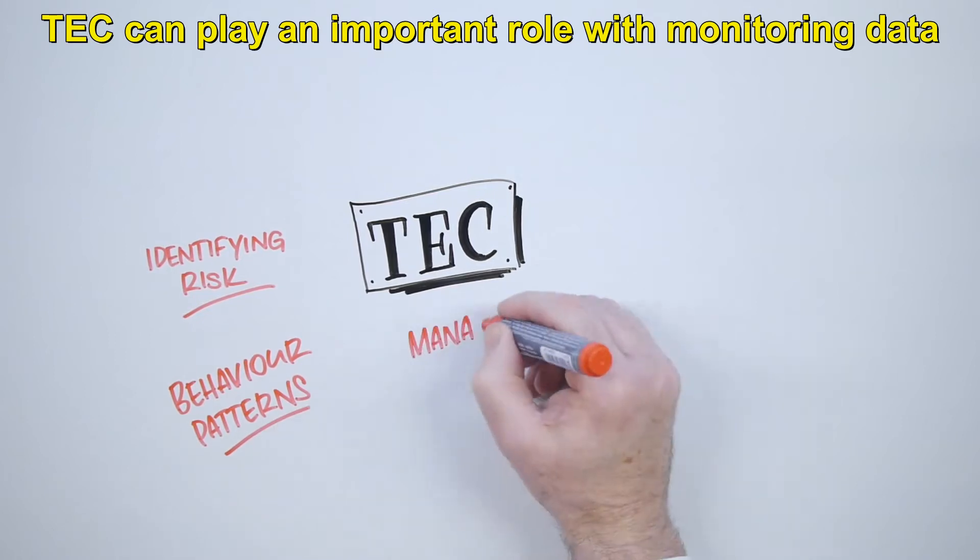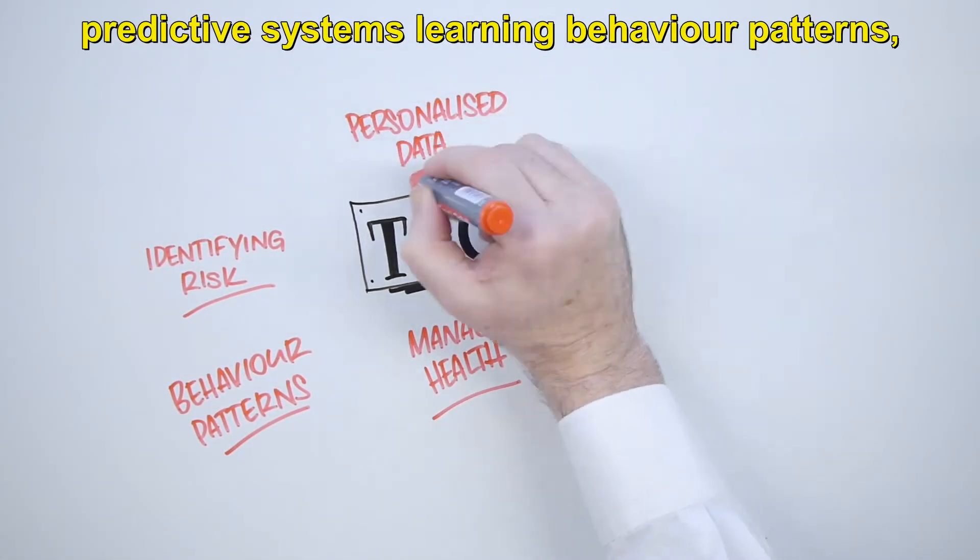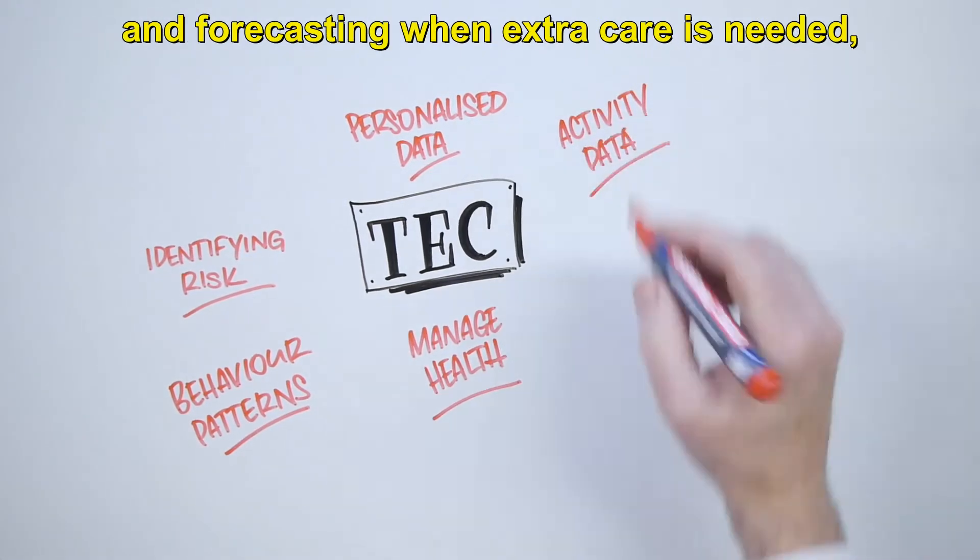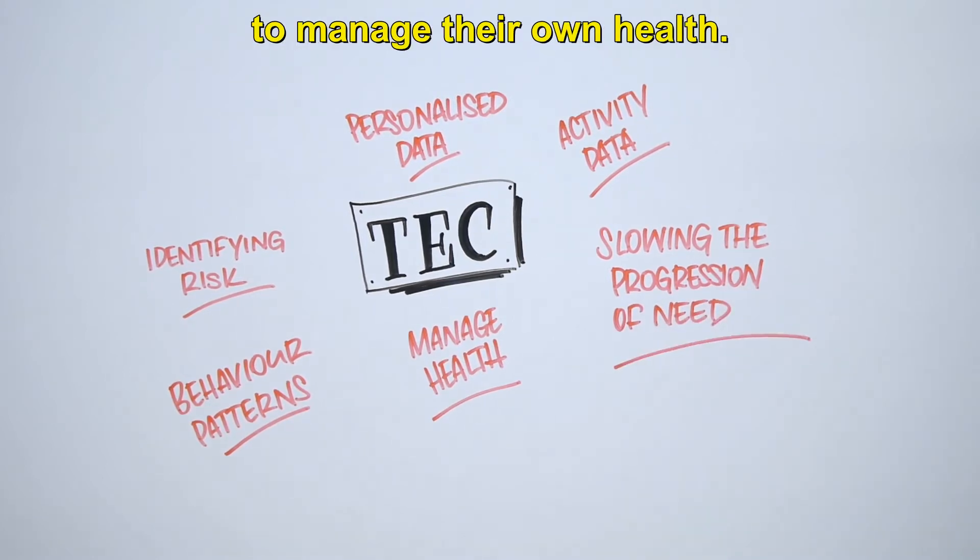Tech can play an important role with monitoring data identifying people in high-risk groups, predictive systems learning behavior patterns and forecasting when extra care is needed, and digital devices helping individuals to manage their own health.